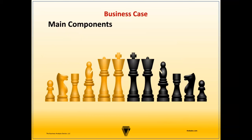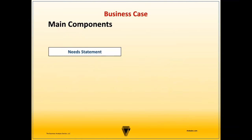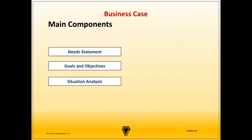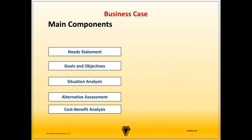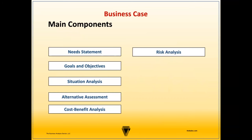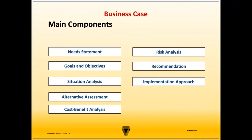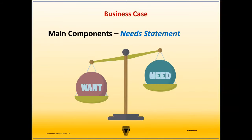Now let's look at the main components of a business case. This includes the need statement, the goals and objectives, the situation analysis, the alternative assessment, the cost-benefit analysis, the risk analysis, the solution recommendation, the implementation approach, the evaluation measures, and supporting documentation. Now let's look at each of these components a bit closer.